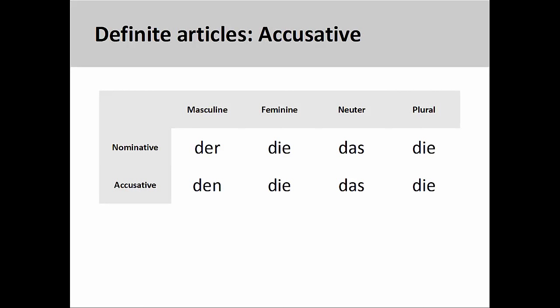The second row of the chart would be definite articles in the accusative case. These definite articles mark the noun that follows as being the direct object of the sentence — the noun that receives the action performed by the subject of the sentence.